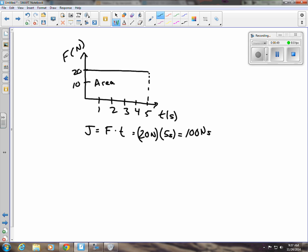If I do base of 5 times the height of 20, I get 100 N seconds as well. So the impulse equals the area below an F-t line.